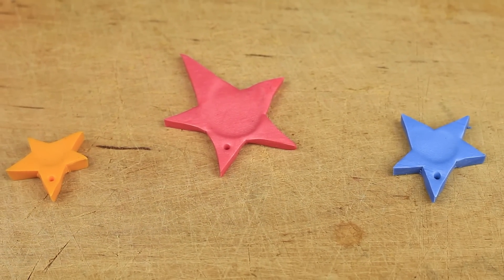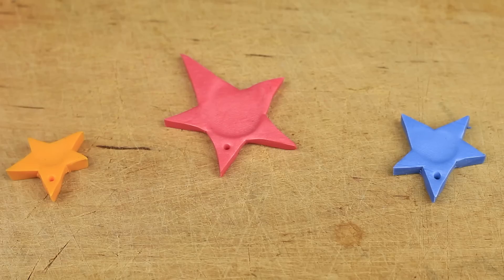Be careful to check the polymer clay instructions for baking time and temperature. We'll bake the charms at 230 degrees Fahrenheit for 10 to 15 minutes.